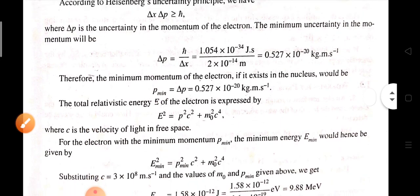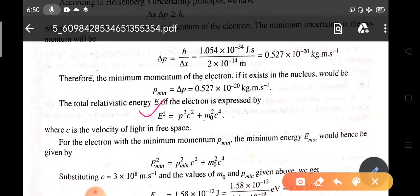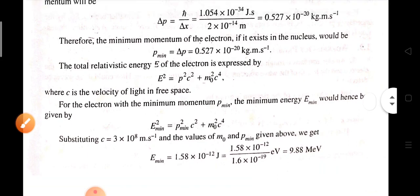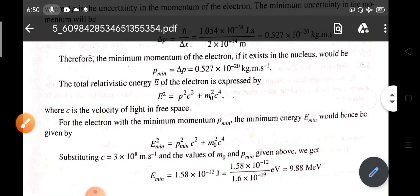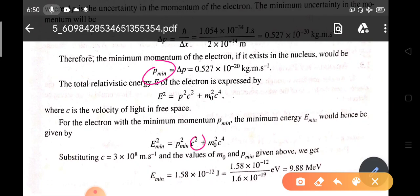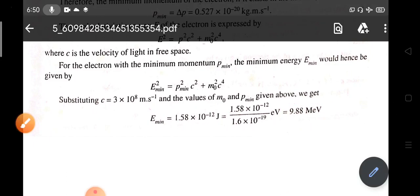Now calculate the relativistic energy E of the electron: E² = p²c² + m₀²c⁴. Substituting the value of p_min, c, and m₀²c⁴, we find the value as 9.88 MeV.